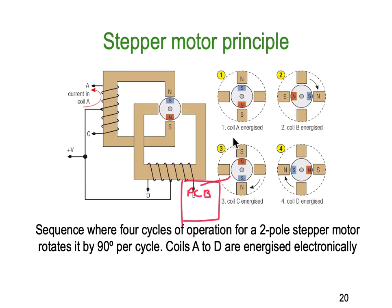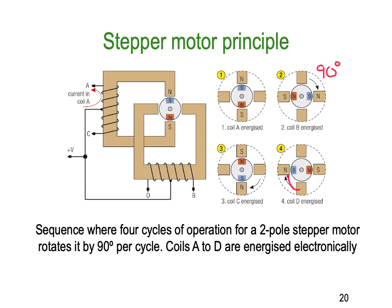This is how the stepper motor actually works. In step one we set up a north and a south. Step two we simply move the north and the south around — in this case 90 degrees, so our stepper motor would step 90 degrees per switch rather than 7.5 degrees like the previous example. In the next switch we've moved it around another 90 degrees, and so on. Effectively all we're doing is putting the appropriate current through the appropriate winding to simply step the motor around 90 degrees at a time.